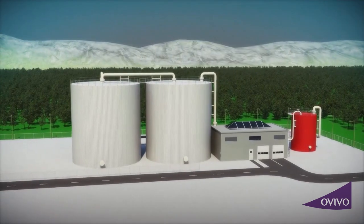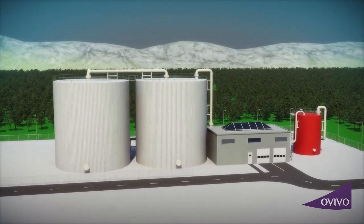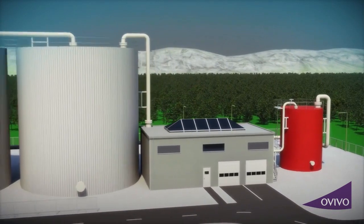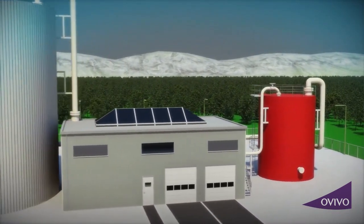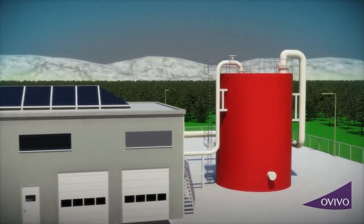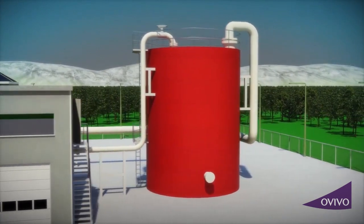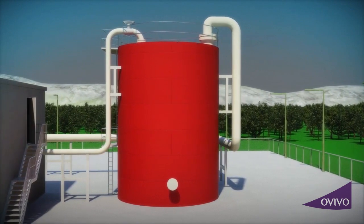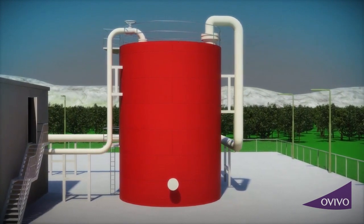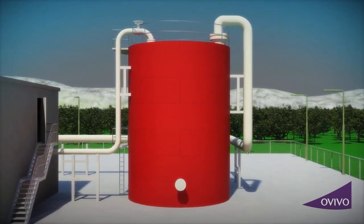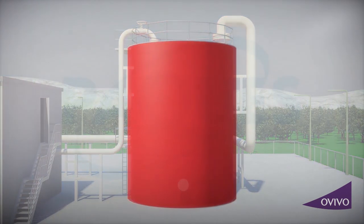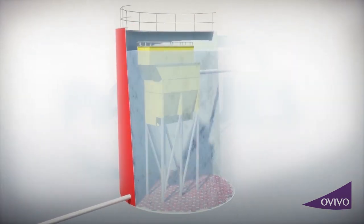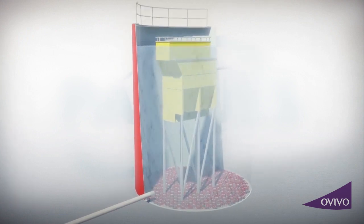The Anamox process is a biological process for the removal of ammonium from wastewater and waste gas. It is an elegant shortcut in the natural nitrogen cycle, in which ammonium is directly converted into nitrogen gas. The Anamox process is highly robust and sustainable, operating at very low costs and CO2 emissions. The Anamox process is characterized by three important parts.